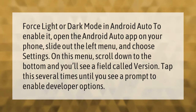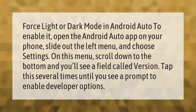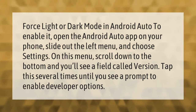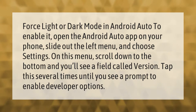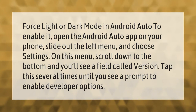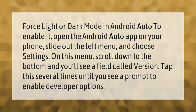To force light or dark mode in Android Auto, open the Android Auto app on your phone, slide out the left menu, and choose Settings. On this menu, scroll down to the bottom and you'll see a field called 'Version'. Tap this several times until you see a prompt to enable developer options. Thank you for watching — please subscribe and hit the bell notification.